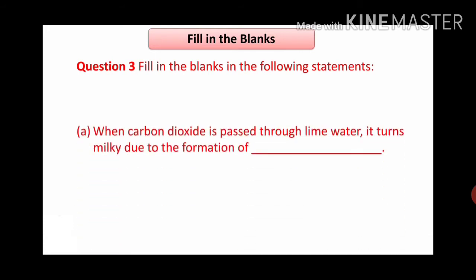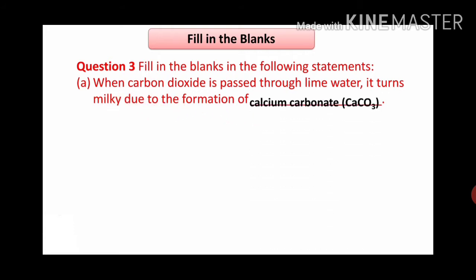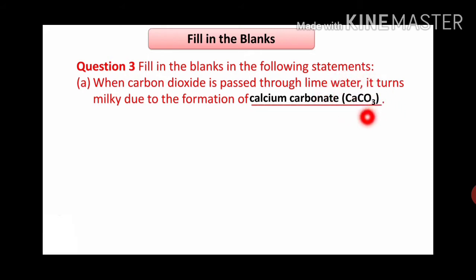Next question: fill in the blanks. First one: when carbon dioxide is passed through lime water, it turns milky due to the formation of dash. When we pass carbon dioxide through lime water, the lime water forms a milky color. What is formed? The formation is of calcium carbonate, whose chemical formula is CaCO3, that is calcium carbonate.